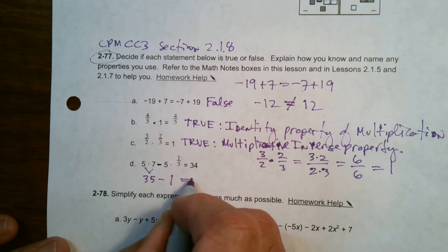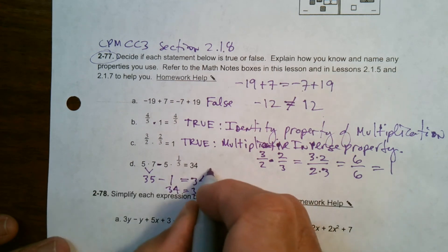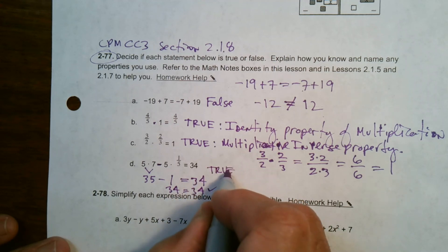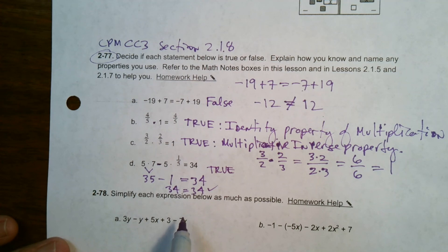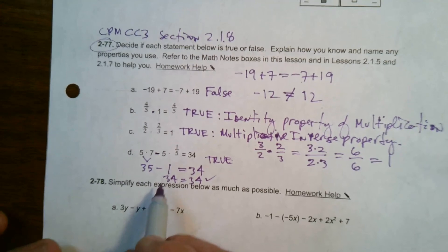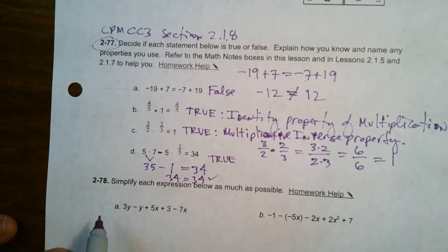Does 35 minus 1 equal 34? Sure does. 34 equals 34. So that is also true. There's really no property here that we're representing. We can just show it by doing the order of operations and showing that the math is true. All right, there you go.